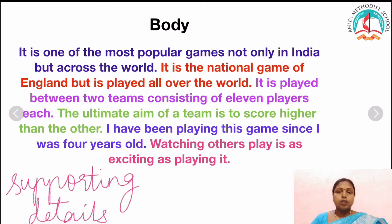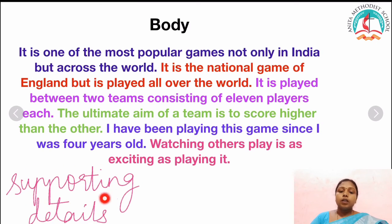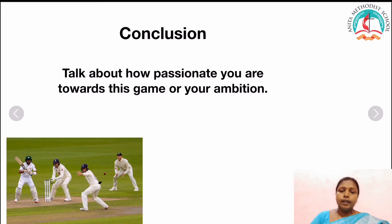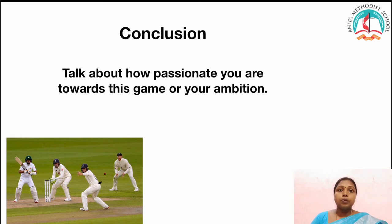I have been playing this game since I was four years old. Watching others play is as exciting as playing it. These sentences are more details — adding more details to the supporting sentence. This is called the body of the paragraph. In the body of the paragraph, we add supporting sentences and supporting details. The conclusion will talk about how passionate you are towards this game or your ambition. The conclusion is where you conclude the paragraph in two or three sentences. Since my topic is my favorite game, I will write how passionate I am towards that game or my ambition. This is how you have to end the paragraph — this is the conclusion part.